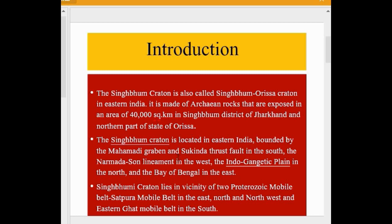The Singhbhum Craton is bounded by the Mahanadi Graben and Sukinda Thrust in the south, the Narmada-Son lineament in the west, the Indo-Gangetic Plain in the north, and the Bay of Bengal in the east. The craton lies in the vicinity of two Proterozoic mobile belts: the Satpura Mobile Belt to the east-north and northwest, and the Eastern Ghats Mobile Belt in the south.